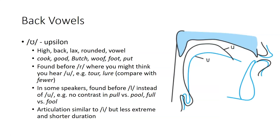The next lower back vowel is U, referred to as upsilon. It is a high back but lax rounded vowel, found in cook, good, butch, woof, foot, put. It's found before R where you might think you hear the oo sound, like in tour or lure, compared with few-wer, where there's a proper oo sound before the -ur.